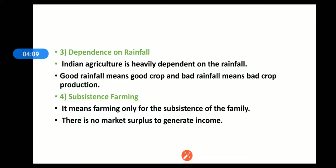Generally, Indian farmers practice subsistence farming because they have small holdings and small land. They can only produce so many crops that they can self-consume. Whatever is left after consuming is sold in the market, but usually there is very little surplus.